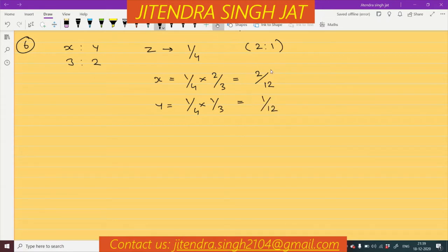It means X is sacrificing 2 by 12 and Y is sacrificing 1 by 12 in favor of Z. Let us calculate new profit sharing ratio.